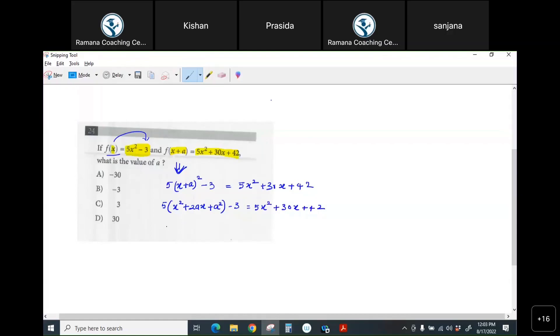Then distribute, so you get 5x² + 10ax + 5a² - 3 equals 5x² + 30x + 42. Correct.